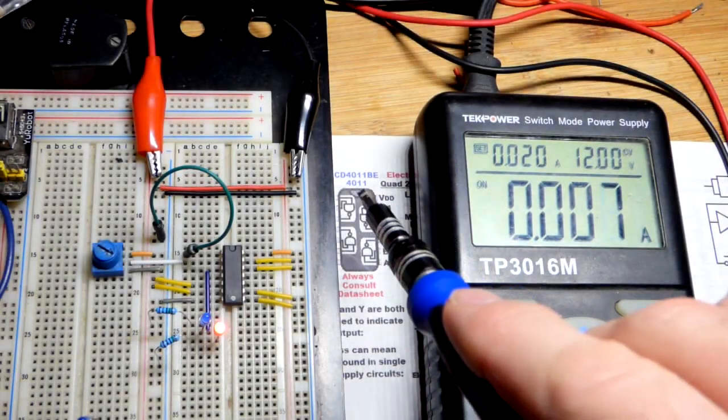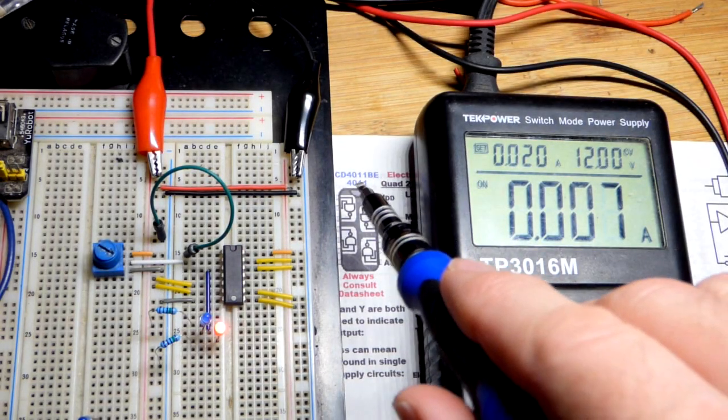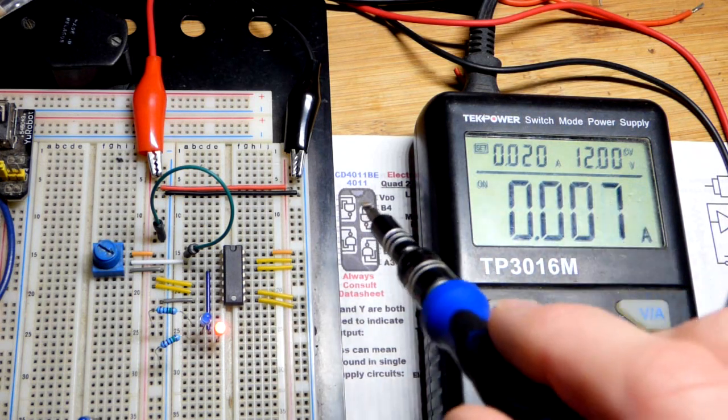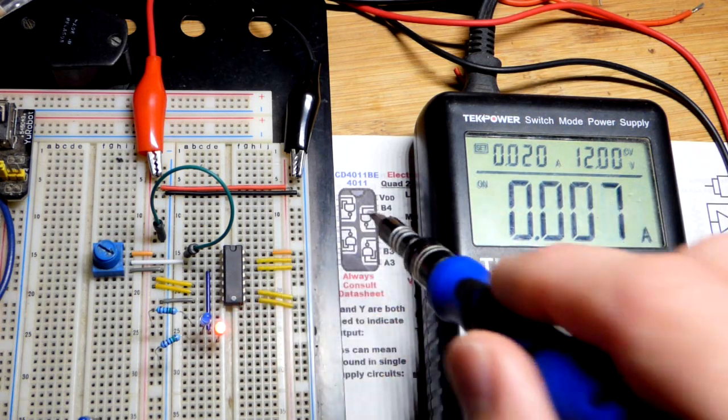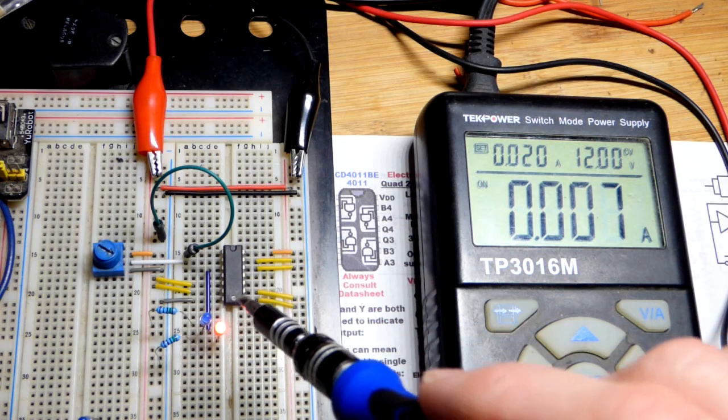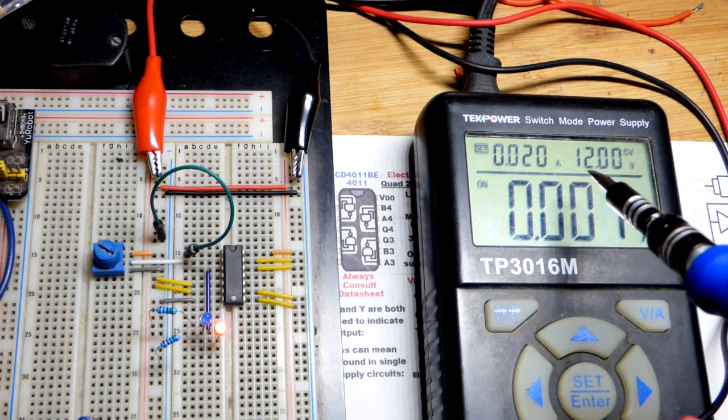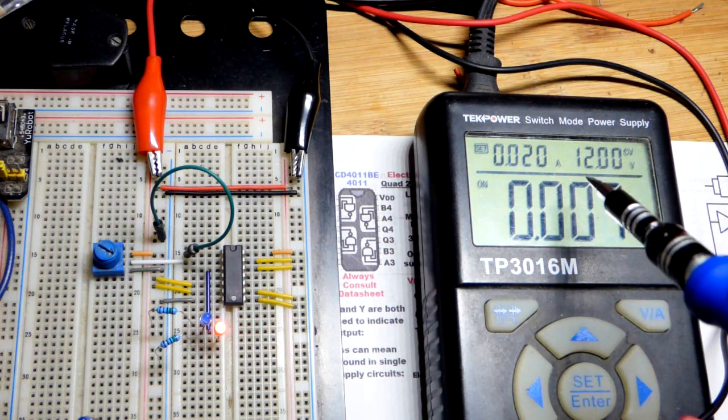So now in this video we're going to look at the 4011 integrated circuit right here. We are using 12 volts. A lot of integrated circuits similar to this, this is CMOS here, they're very susceptible to static shock. Probably this one as well. Also they may not be able to work with more than about five volts and this one can.